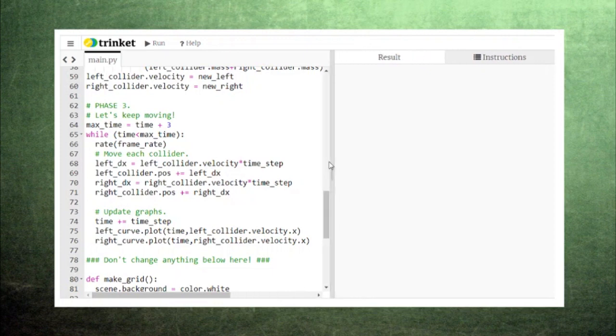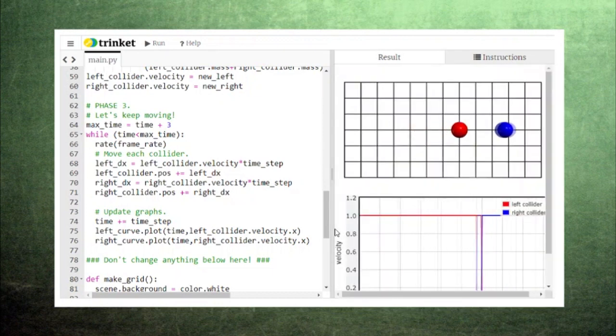Anyway, let's first try the code with the left collider coming in and the right collider stationary and with both colliders having the same mass. The result is really straightforward. The left collider gives all its momentum to the right collider and comes to a stop.